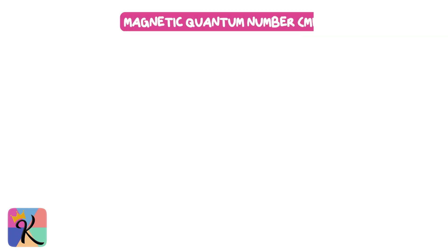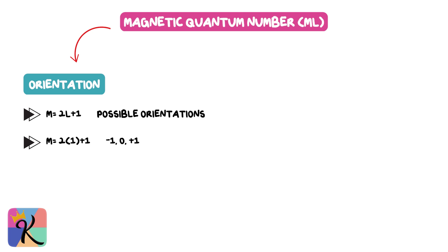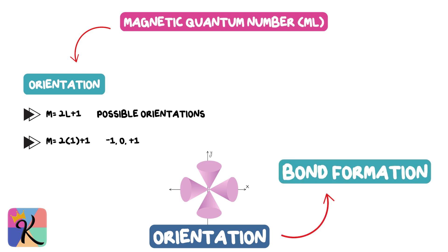The magnetic quantum number (ml) tells us the orientation of the orbital in space. For a given l, there are 2l+1 possible orientations. For example, for l=1 (p orbitals), ml can be -1, 0, or +1, corresponding to the orientation of the orbital along the x, y, or z axes. This orientation is crucial when it comes to bond formation, as the way orbitals overlap depends on how they're oriented in space.